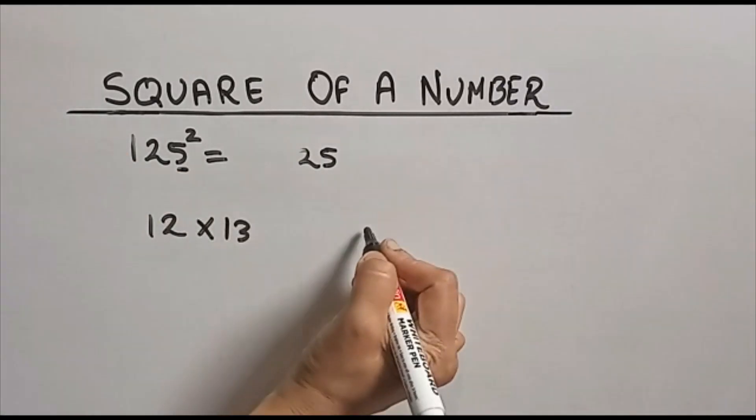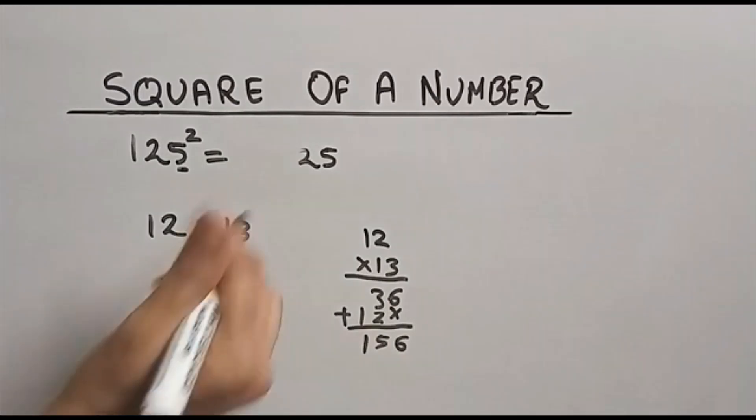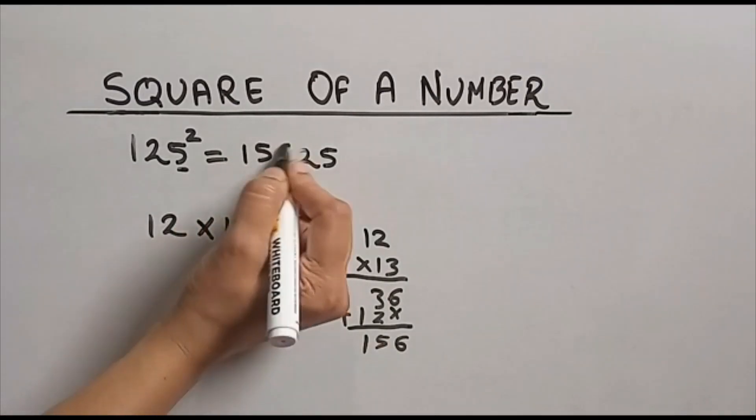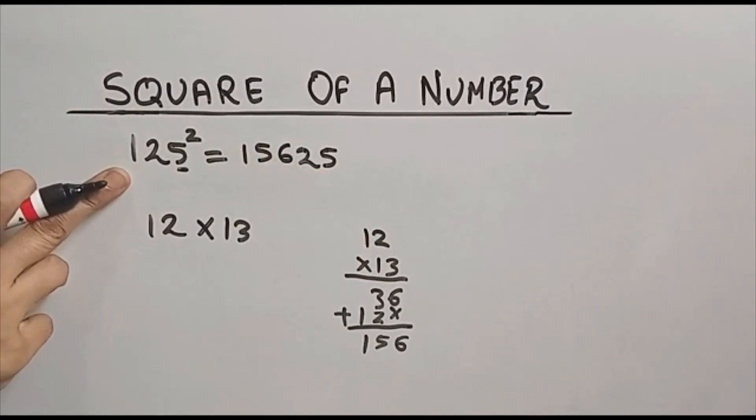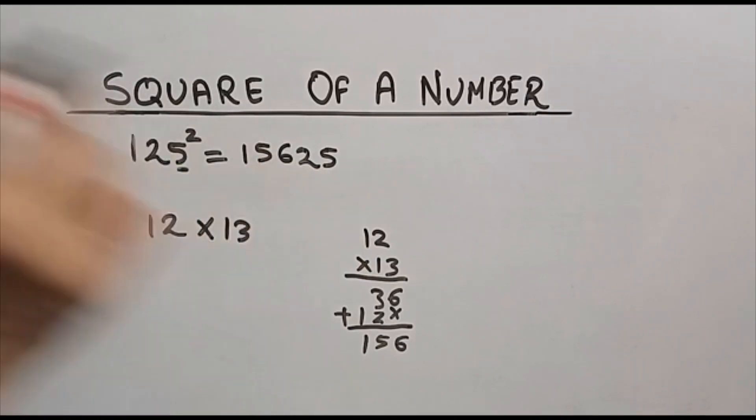Multiply 12 into 13. 3×2 is 6, 3×1 is 3. This 1 and 2 we will add: 6, 5, 156. Write here 156. This is the square of 125. Whenever we have 5 at the unit place, then only we use this method.